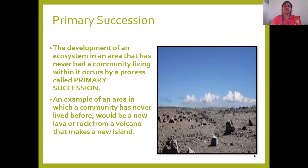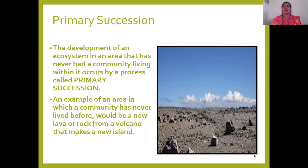Now we are going to look at an example of how ecological succession takes place. Whenever you have a completely empty area where there was no community existing, and then over time a group of organisms grows there — that we call primary succession. Initially nothing is there, but over time organisms show up in that particular area.